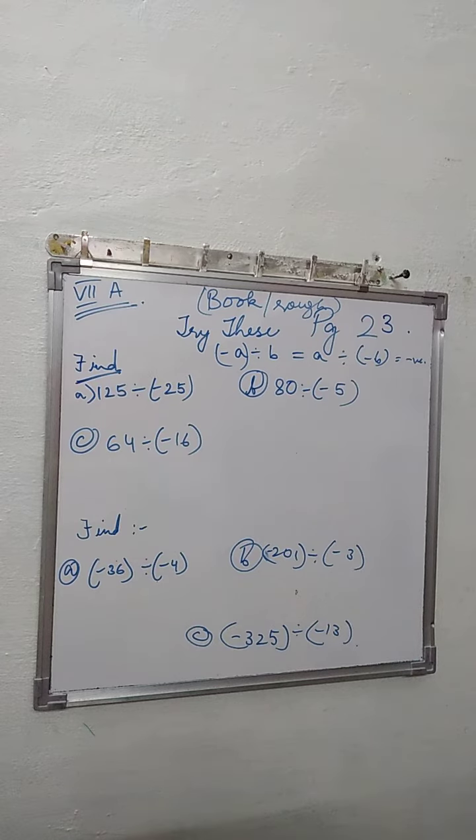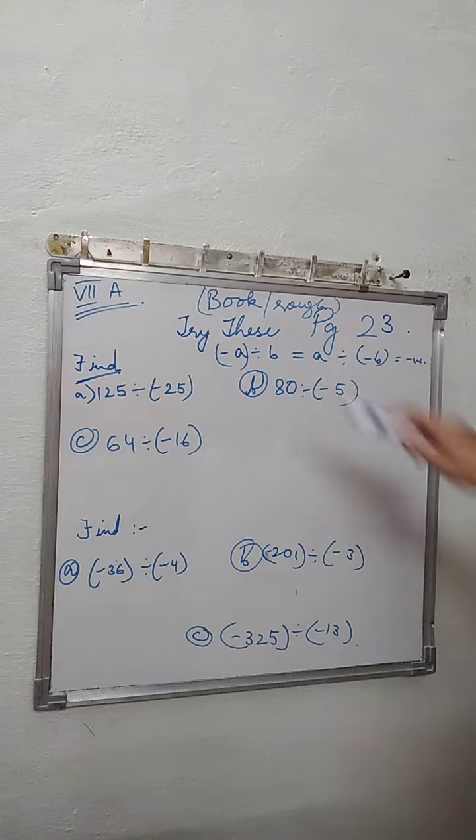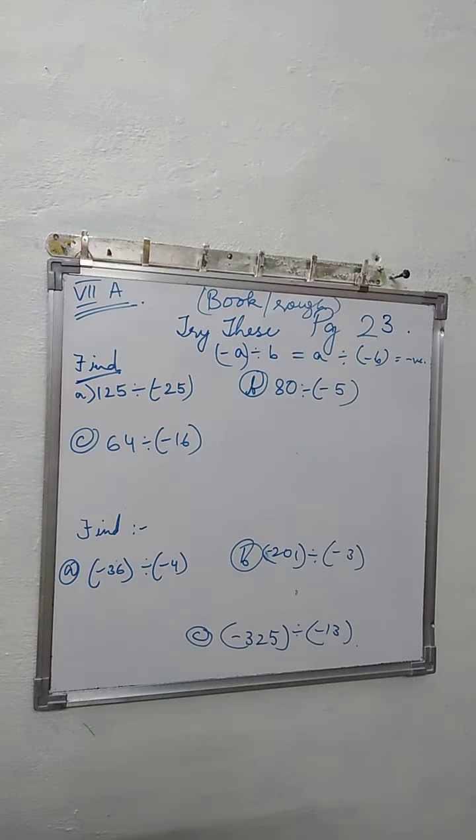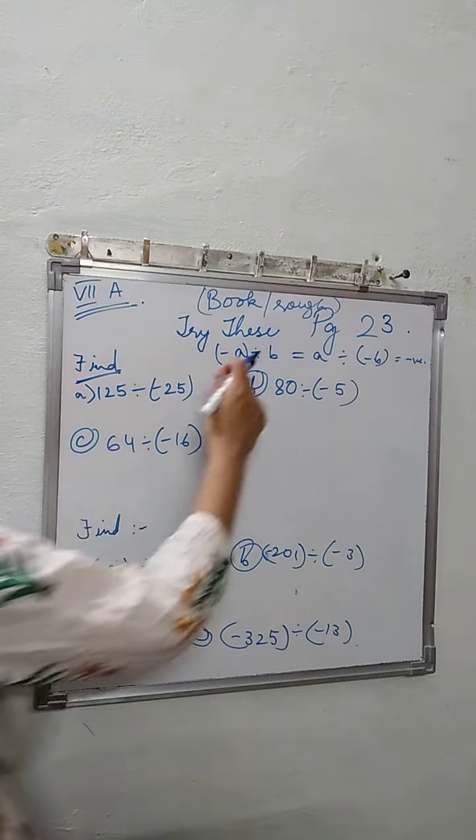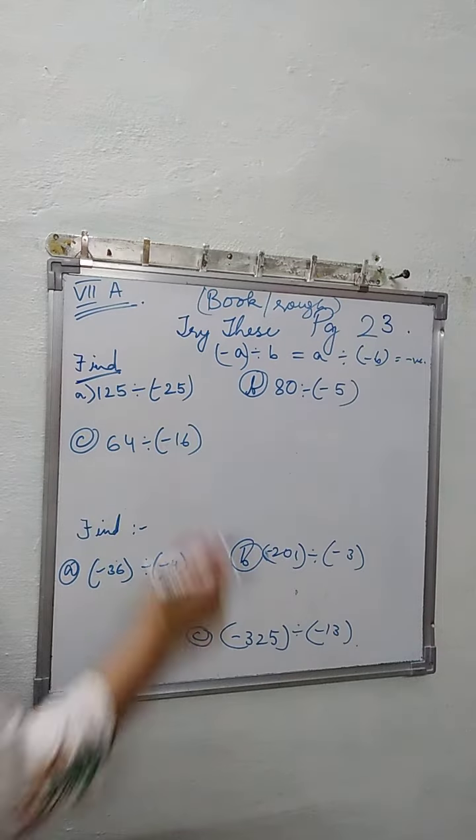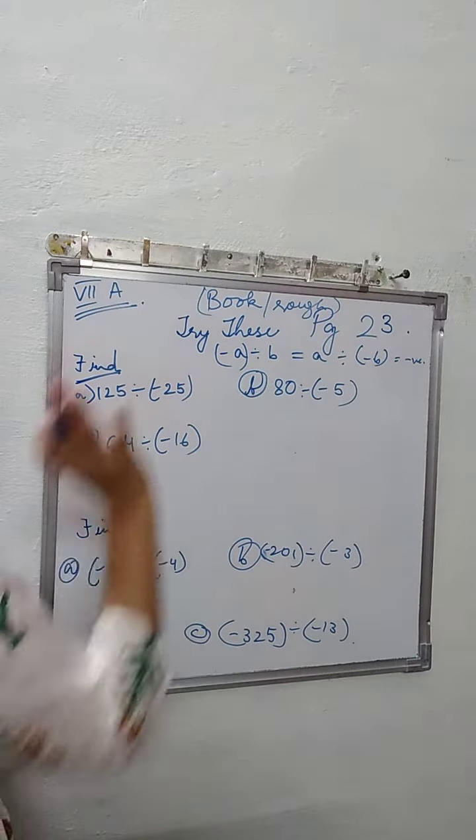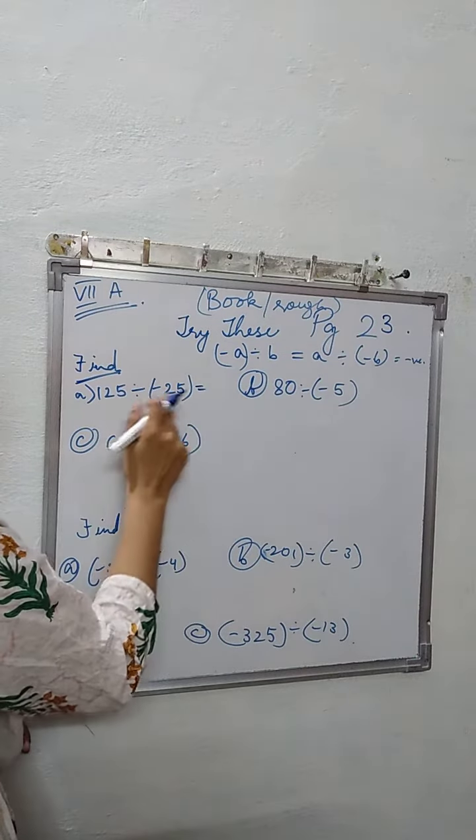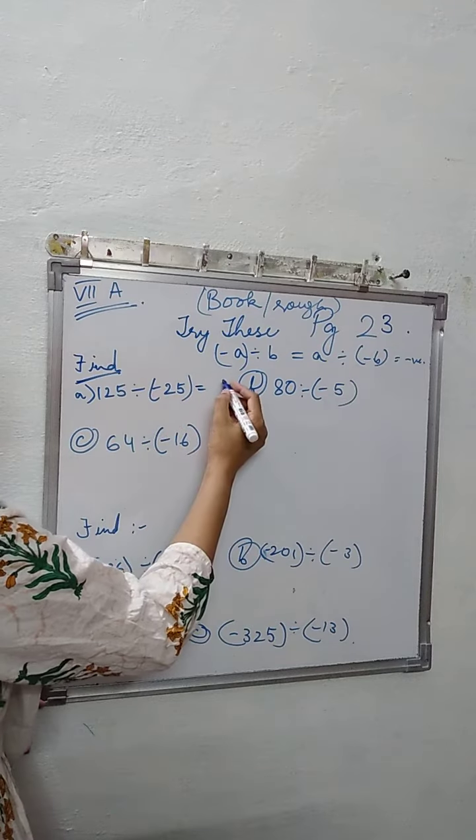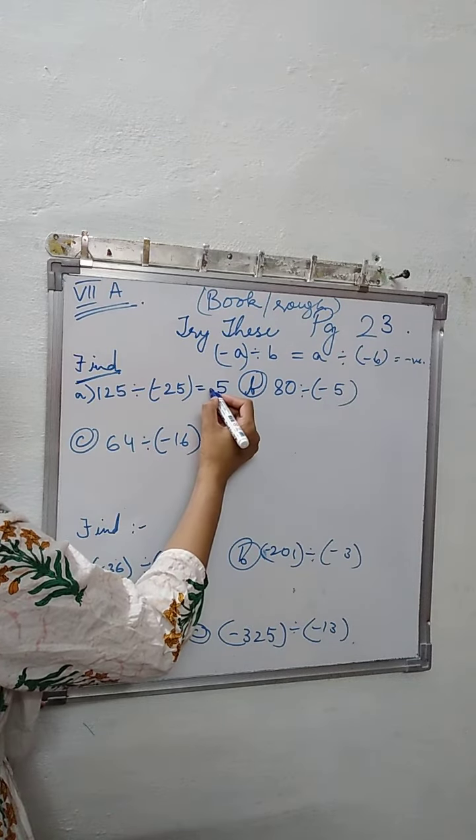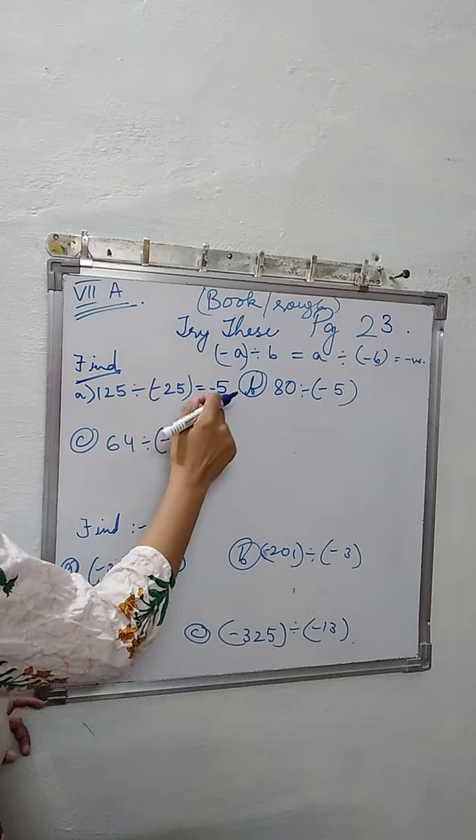Starting with the Try These of page 23. Again, you will do it in your book or in your rough copy if you don't have the book. We are going to follow the same property: if any of the two is negative, answer is negative. So -125 divided by 25 will give you 5, and this one is negative, so...